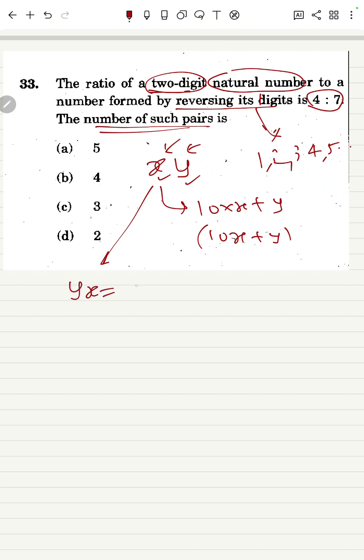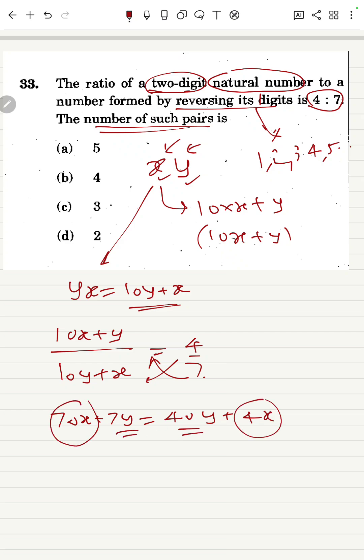So the ratio of this number to its reverse number—what is the reverse number? YX, nothing but 10 into Y plus X. So it is given that 10X plus Y divided by its reverse number is 4 to 7. Then you cross multiply. You know that this is 70X plus 7Y equals 40Y plus 4X. So this is X, this is Y. So you bring these X and Y on either side.